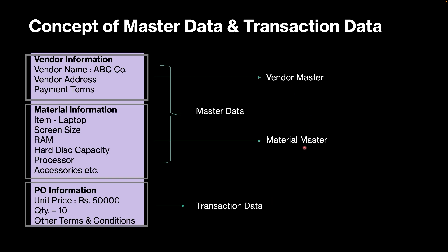The vendor information will be saved in the vendor master and the material information will be saved in the material master. Basically, we assign something called codes to these entities — you will have a vendor code and a material code. You only have to enter these codes in your purchase order, and every information of these entities will be auto-populated or defaulted from their masters. If you enter a vendor code, the vendor information will be defaulted. If you enter a material code, the material information will be defaulted. Once you enter these two master data, then you enter the transaction data — quantity, unit price, terms and conditions — and then you will be able to create your purchase order.